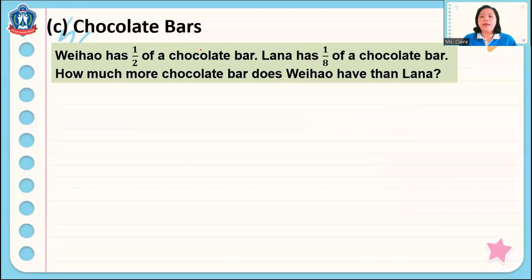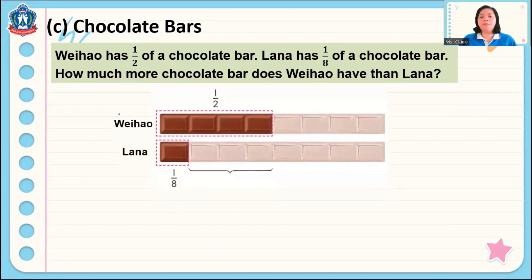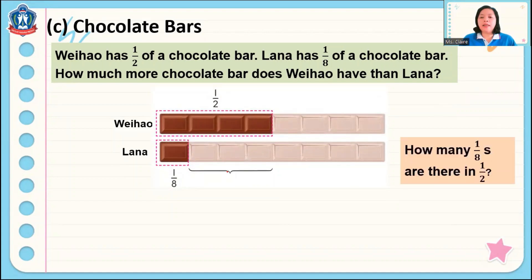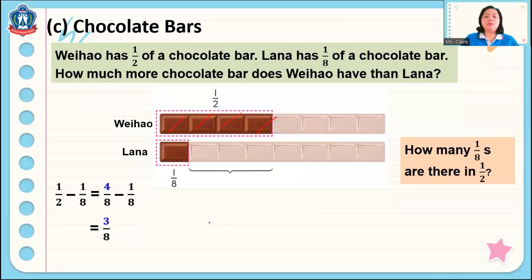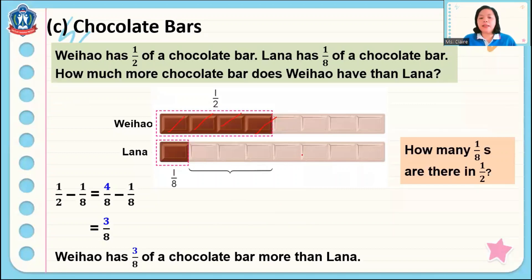Here is another problem. We has one half of a chocolate bar. Lana has one eighth of a chocolate bar. How much more chocolate bar does We have than Lana? We are going to subtract. We is one half, Lana is one eighth. How many one eighths are there in one half? In one half, there are four one eighths, so one half equals four eighths. We subtract four eighths minus one eighth, which equals three eighths. Therefore, We has three eighths of a chocolate bar more than Lana. In subtracting fractions, make sure both fractions have similar denominators.